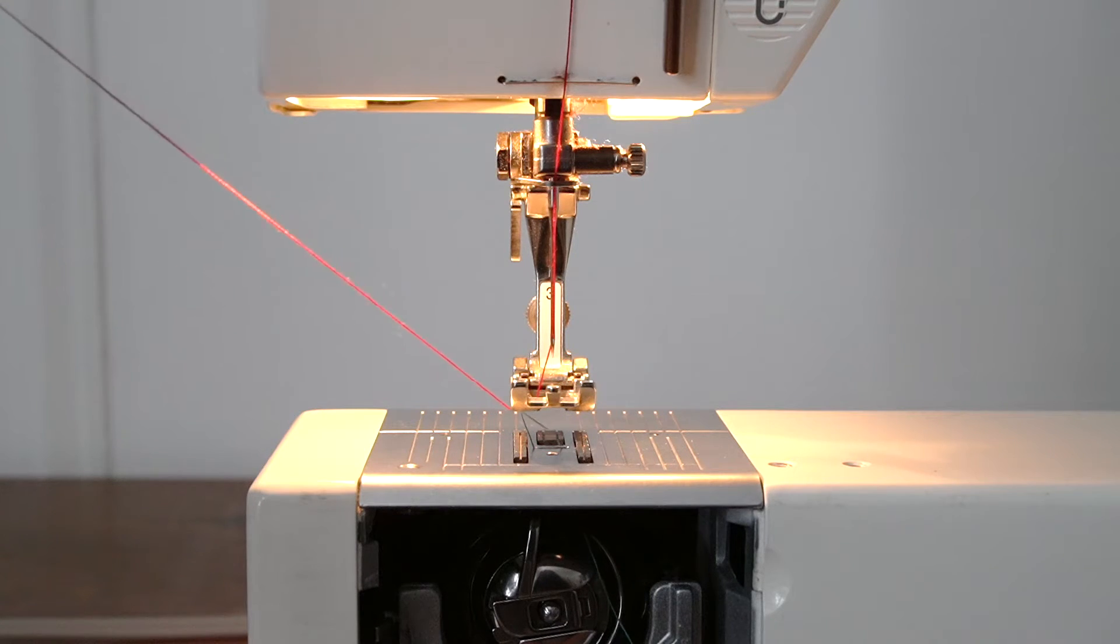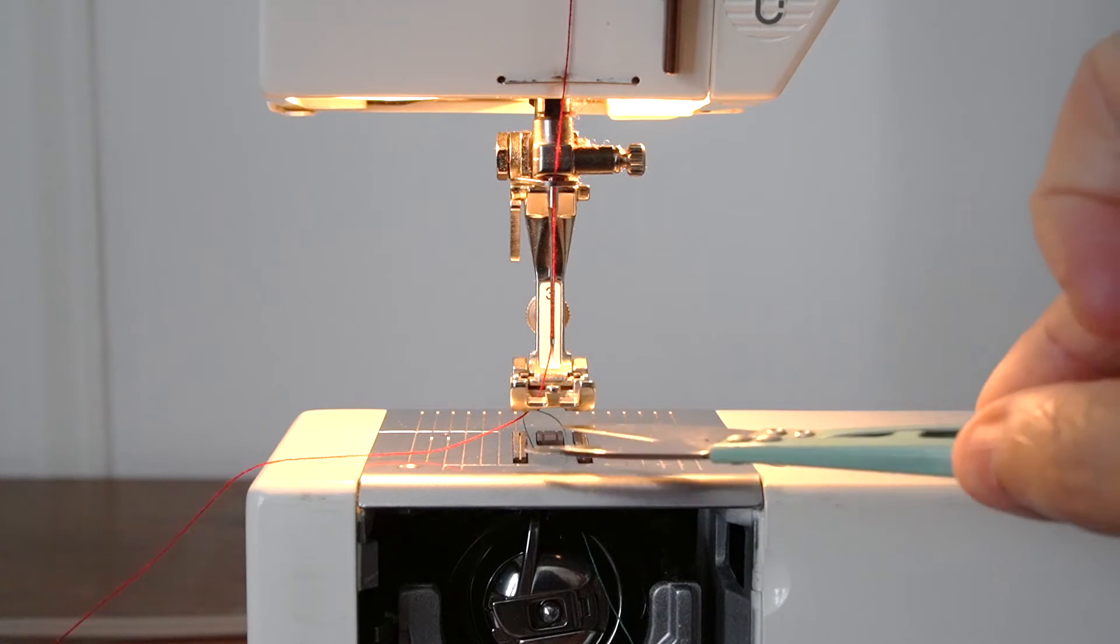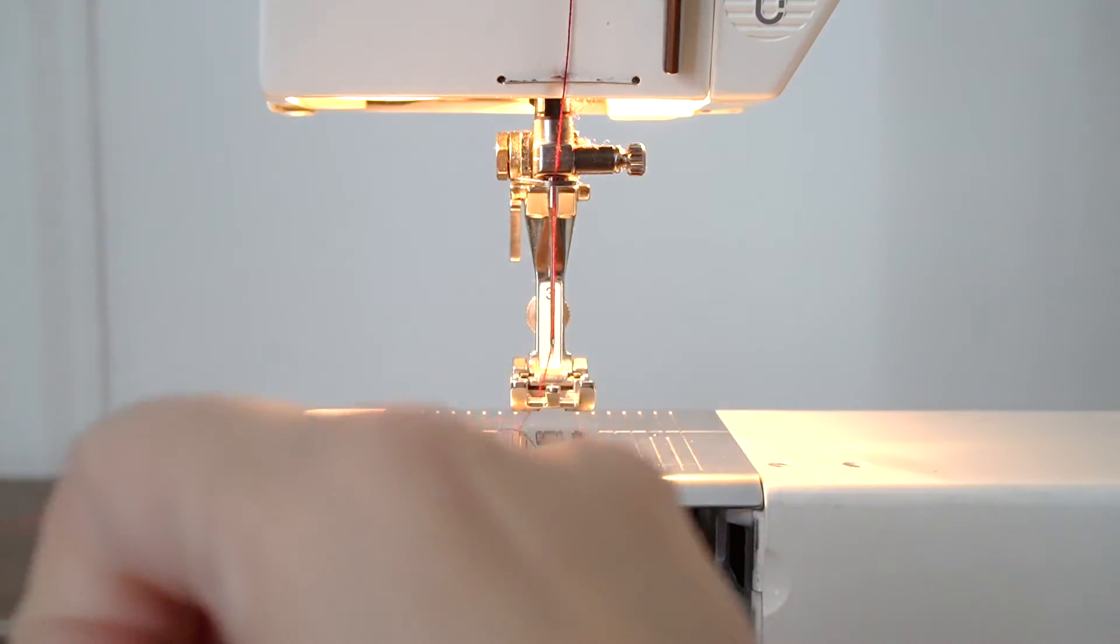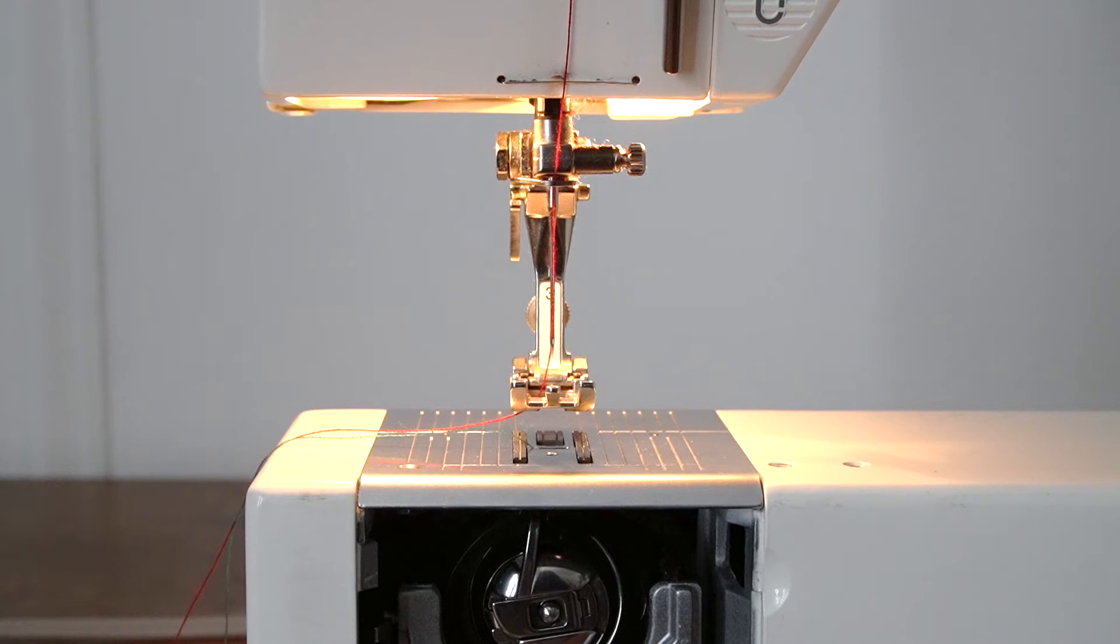Then you'll pull your top thread from your needle, which is already threaded, and you can see there's a little loop right here. It's pulled the bobbin thread up from the chamber. And I just used something like a pencil or a pair of scissors to pull it out. And that is your threaded machine. You're ready to sew.